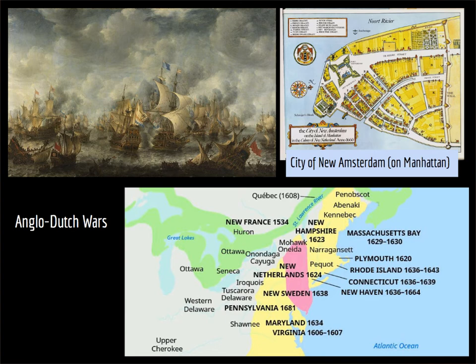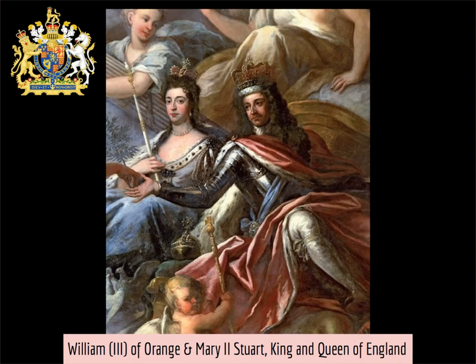The Dutch lost the First War but won the next two, despite the fact that they lost their primary North American colony New Netherlands to the English, who promptly renamed the colony New York after the naval commander, the Duke of York, who had won the battle for the colony. So the Dutch empire contracted as a result of the Anglo-Dutch wars, even though they were able to at that time maintain their preeminence in trade. Back in 1665, when the Dutch lost New Netherlands, they had lost it to the Duke of York — that is, to the man who would become James II of England.